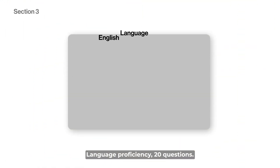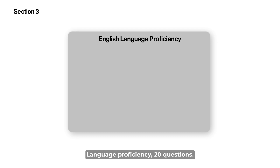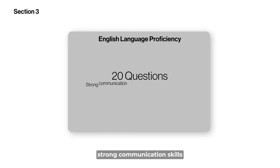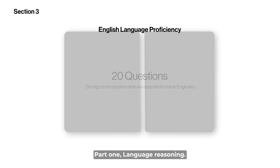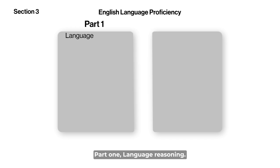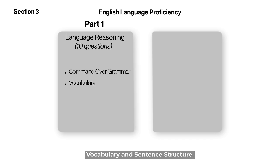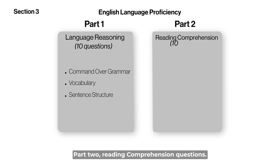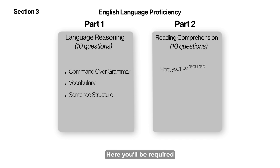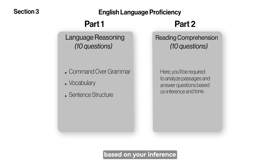The third section is English Language Proficiency with 20 questions. Strong communication skills are essential for future engineers. Part 1 is Language Reasoning with 10 questions, assessing your command over grammar, vocabulary, and sentence structure. Part 2 is Reading Comprehension with 10 questions, where you'll be required to analyze passages and answer questions based on your inference and tone.